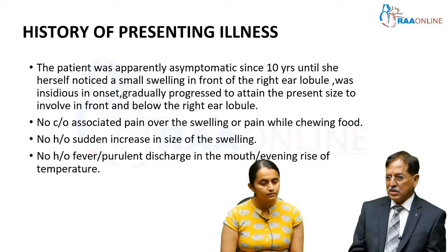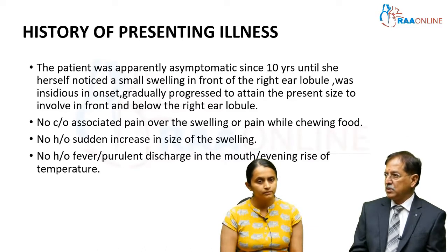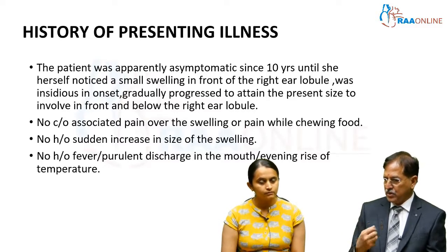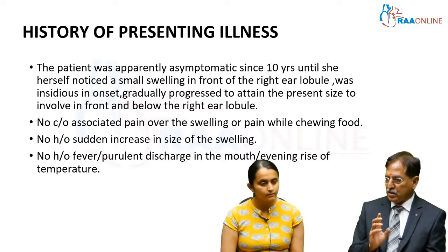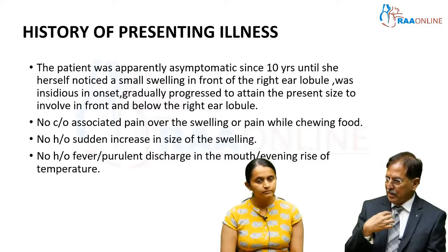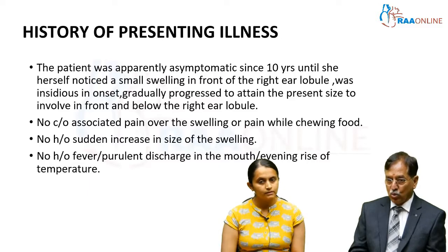In which salivary gland is sialadenitis most common? It's common in the submandibular salivary gland. There are two reasons: the secretions of the submandibular gland are mucoid, and the Wharton's duct runs against gravity. Also, being on the floor of the mouth, food particles can settle there and initiate infections. So you ask about pain to rule that out.